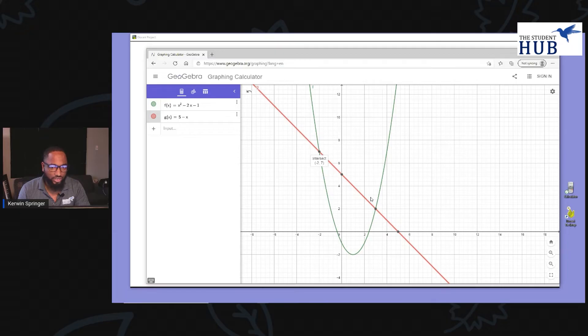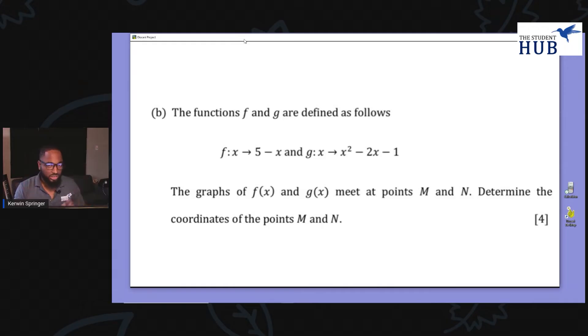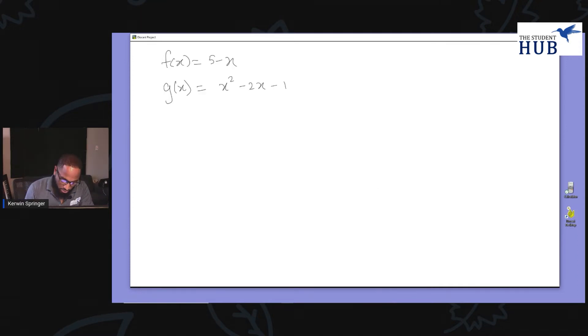Negative 2, 7 and 3, 2. So that's the answer. This is what we should pull out the hat when we do the question. But there's a nice mathematical way to do this. So I'm going to show you this method. If you want to learn simultaneous equations, you can just search Kerwin Springer simultaneous equations on YouTube and you'll see me go through it in a lesson. So when you see this happens, we need to solve this and in so doing, find the points M and N where the two of them meet.